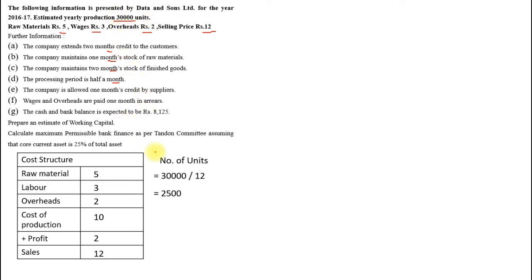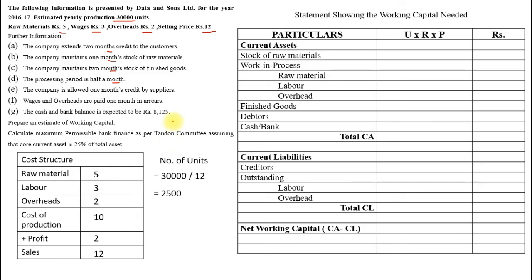Number of units: total production 30,000 divided by 12 months = 2,500 units per month. We now start the actual preparation. Under current assets, stock of raw material: 2,500 × 5 × 1 month = 12,500. The company maintains one month's stock of raw material.